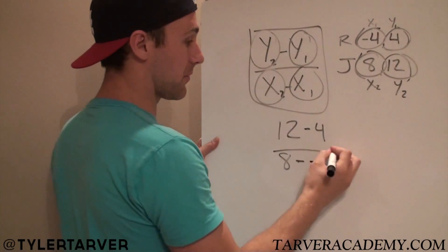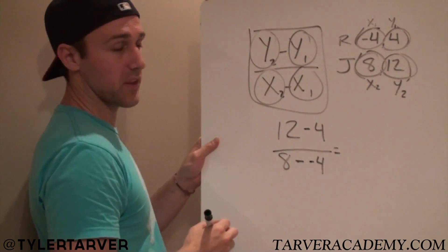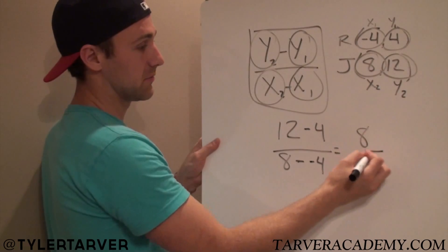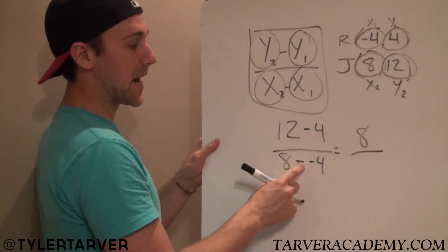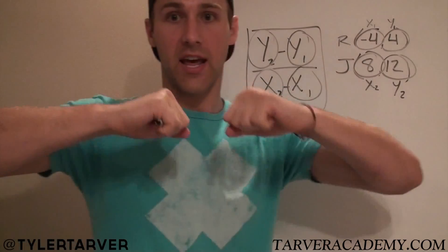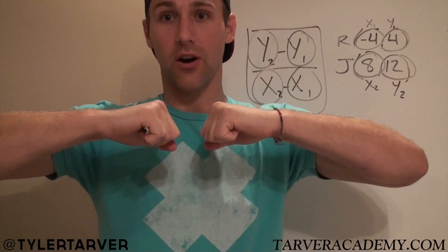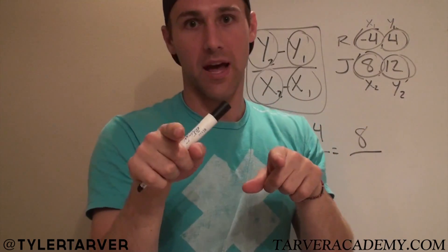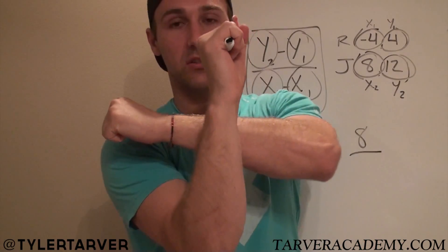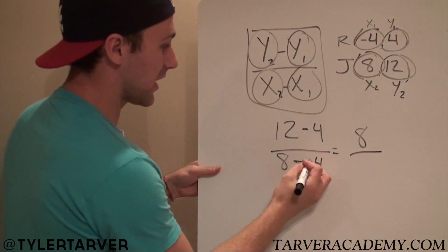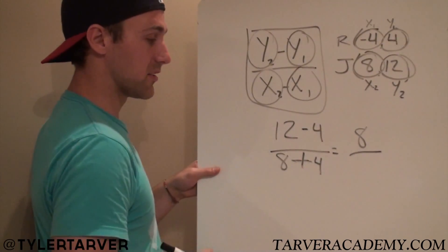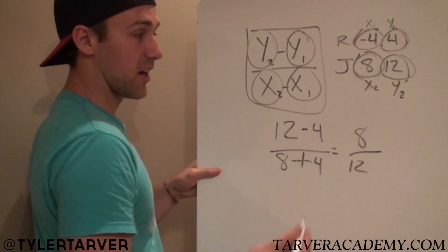Now this is where you do top and bottom because it's really easy to get confused. 12 minus 4 is what? 8. That's easy. 8 minus negative 4. What happens when you minus a negative? 2 wrongs make a right. It's only in math. Don't do that in real life. So we've got a minus, a negative, turns into a positive. So that becomes a positive. 8 plus 4 is what? 12. We're done. We've found the slope.